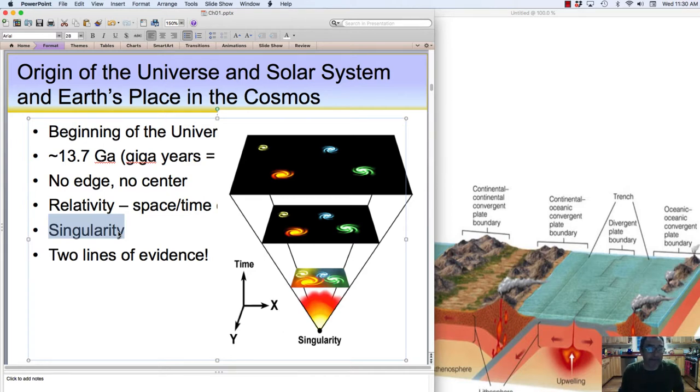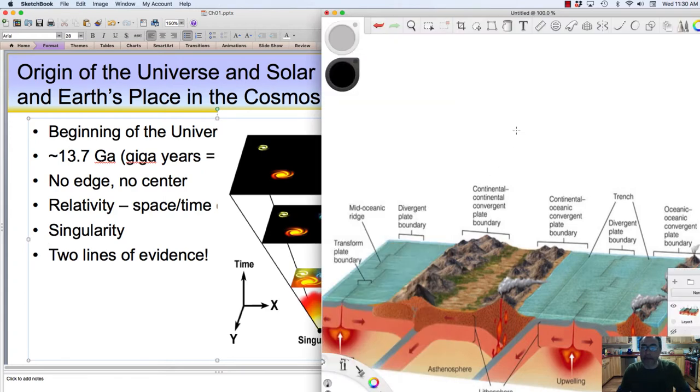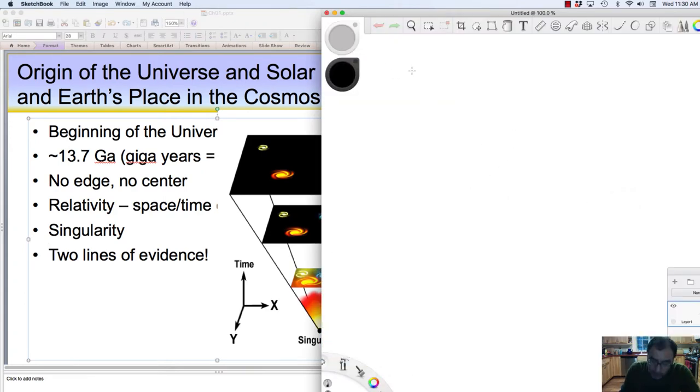So there are two lines of evidence for the Big Bang. Let's look over here. The two lines of evidence we'll see for the Big Bang is one, we see this idea of the redshift.